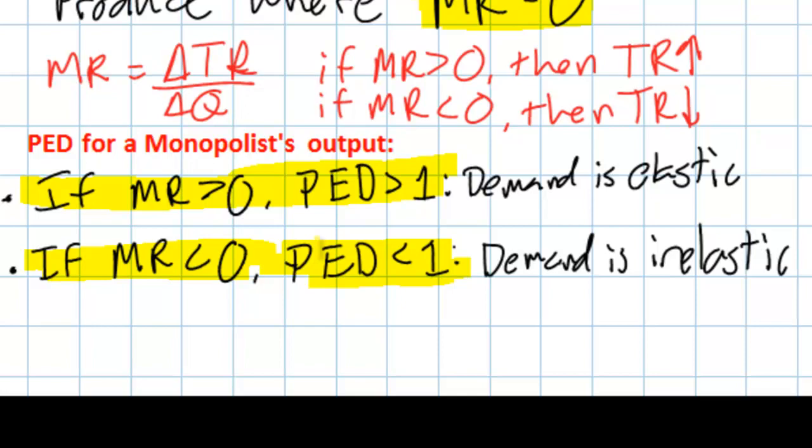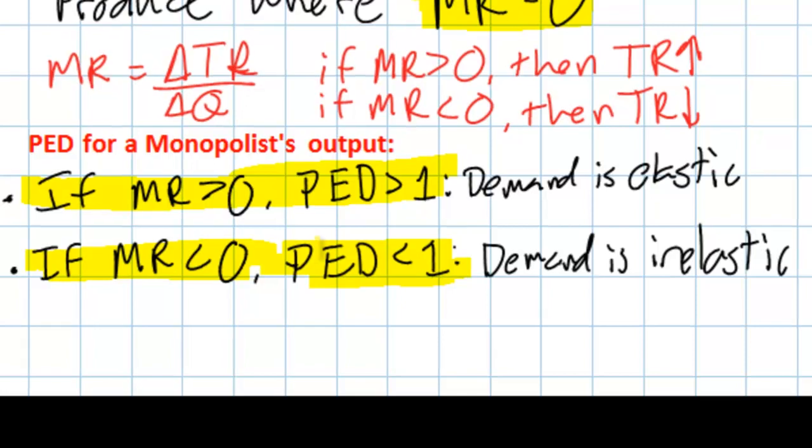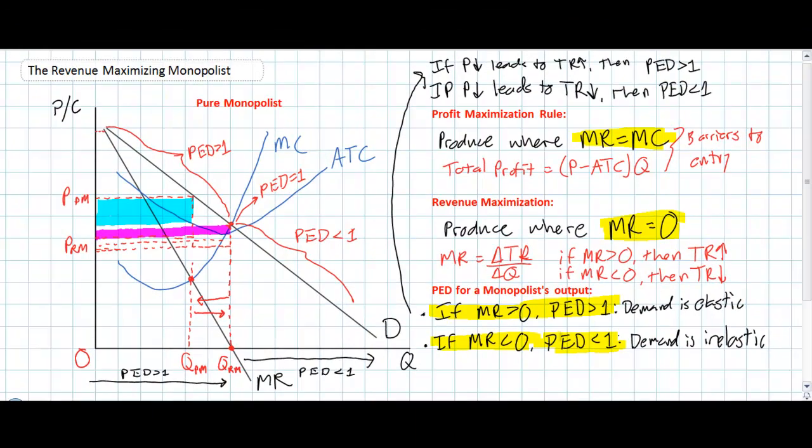In our next lesson, we're going to look at purely monopolistic markets and firms and determine the extent to which such firms are productively and allocatively efficient compared to similar perfectly competitive markets.